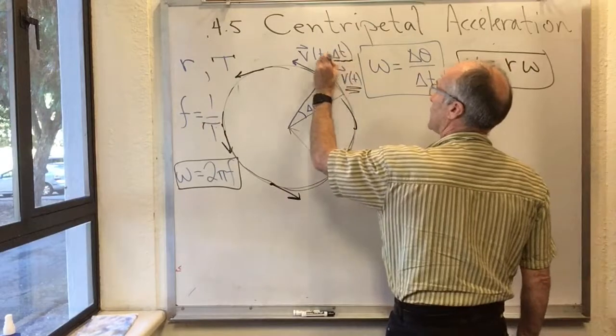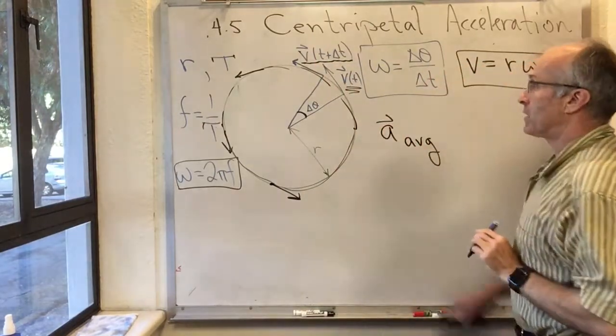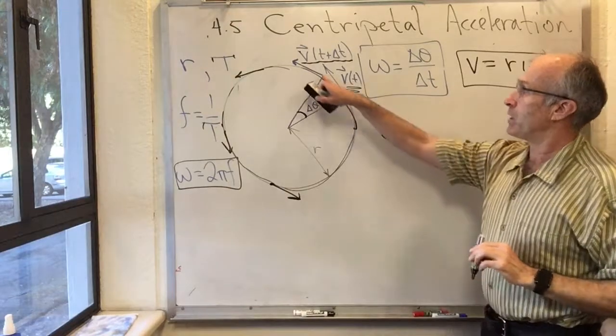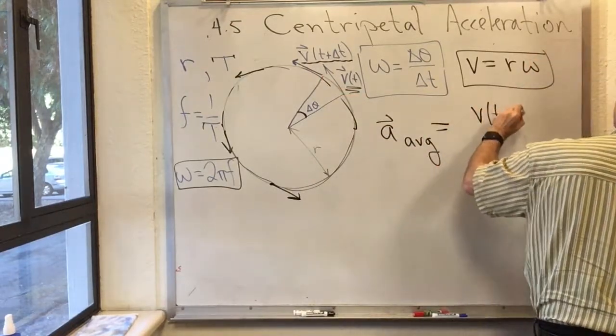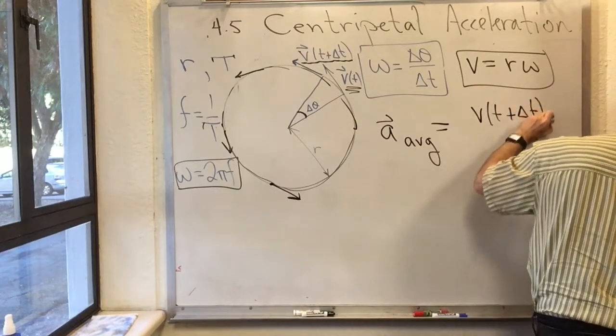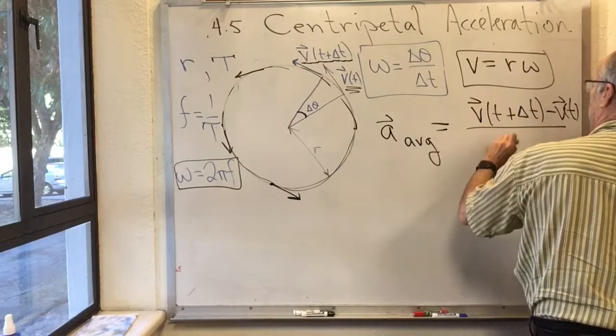And we take the velocity a little time later. So the average acceleration between those two times is the final, v at t plus delta t minus v at t over delta t.